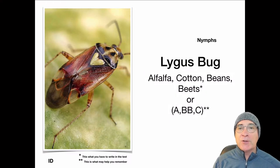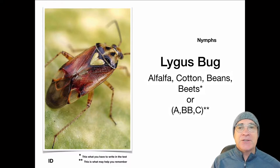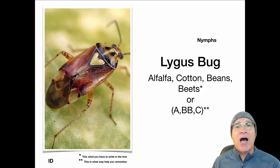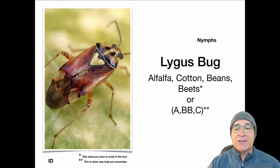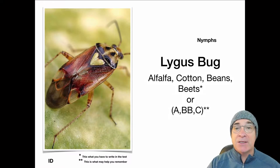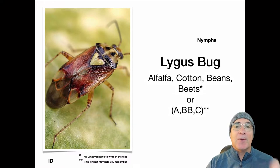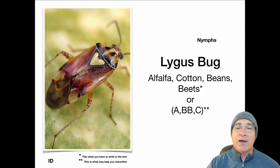What we also need to know is the A-B-B-C's — that means their hosts. The alfalfa, the beets, the beans, and of course the cotton. Those are the main hosts that a lygus bug will have. The A-B-B-C mnemonic has two asterisks by it, which is just to help you remember. What you need to write down on the test is the actual names: alfalfa, cotton, beets, and beans. The mnemonic just helps you remind yourself.